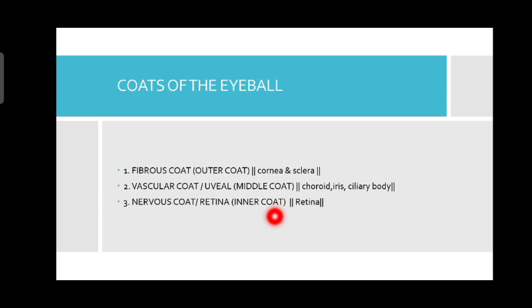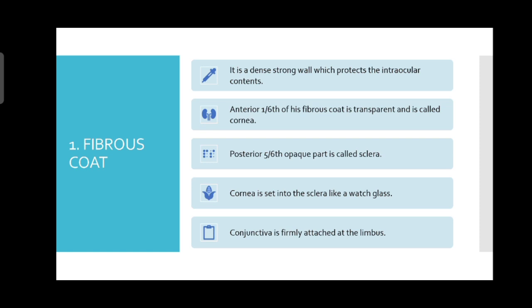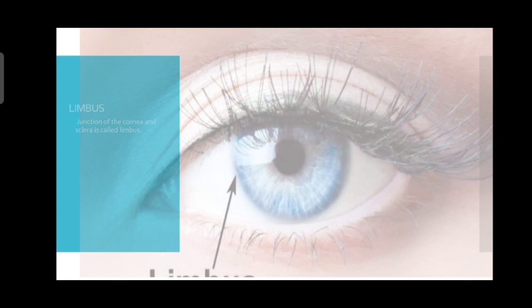Let's talk about the fibrous coat in detail. It is a dense, strong wall which protects the intraocular content. The fibrous coat consists of the cornea — the transparent part — and the sclera — the white opaque part. The anterior one-sixth of the fibrous coat is transparent and is called the cornea, and the posterior five-sixths opaque part is called the sclera. The cornea is set into the sclera like a watch glass.